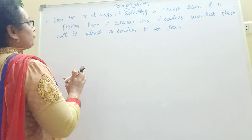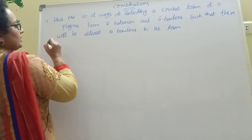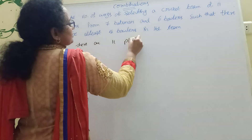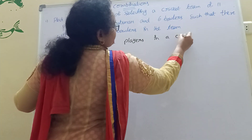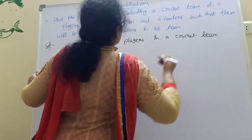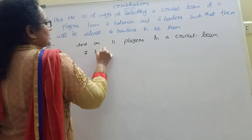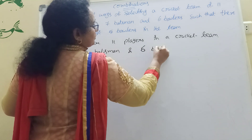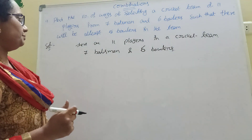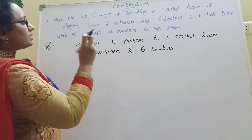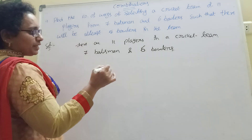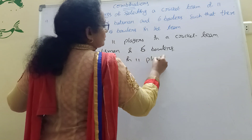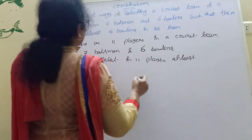Find the number of ways of selecting a cricket team of 11 players. There are 11 players in the cricket team. There are 7 batsmen and 6 bowlers. We need to select at least 5 bowlers in that team of 11.